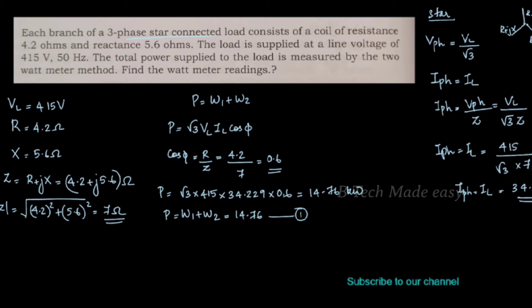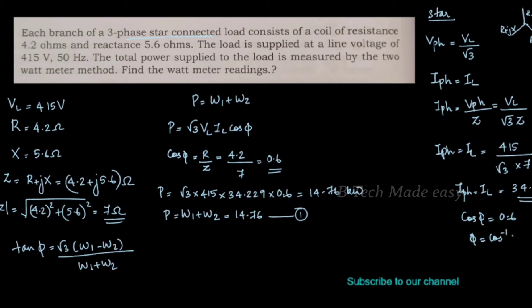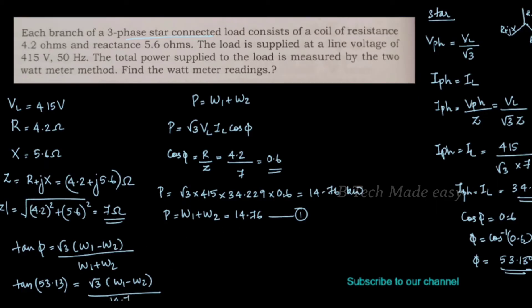Now let's look at the equations for W1 and W2. We know that tan φ equals √3 times (W1 minus W2) divided by (W1 plus W2). Since cosφ equals 0.6, φ equals cos inverse of 0.6, which equals 53.13 degrees. Therefore tan 53.13° equals √3 times (W1 minus W2) divided by (W1 plus W2), and W1 plus W2 equals 14.76 kW.